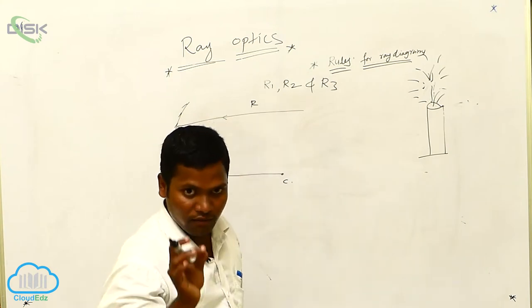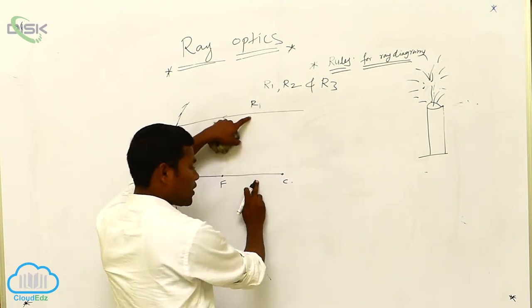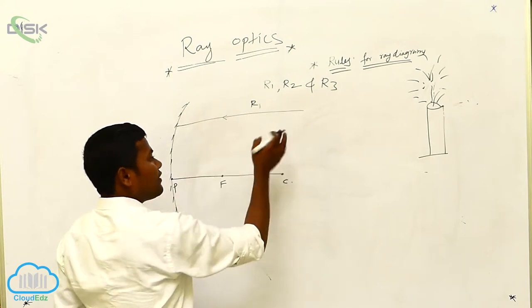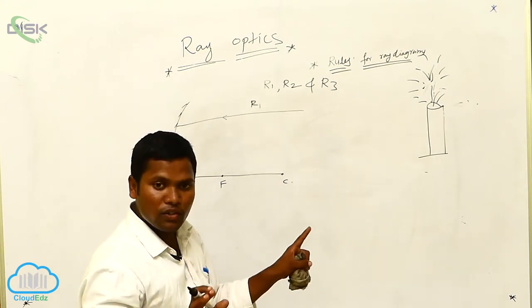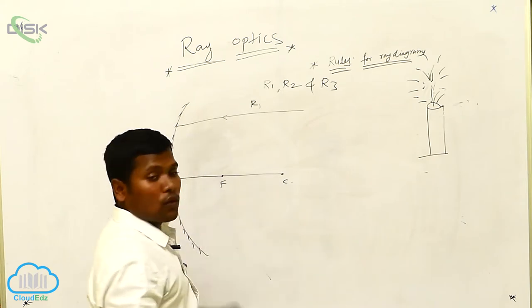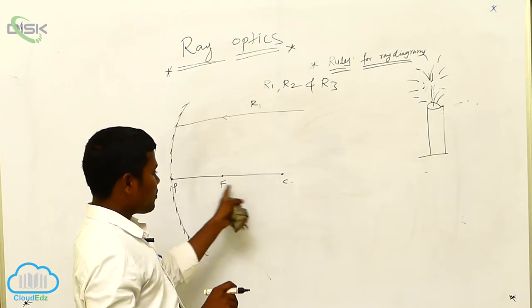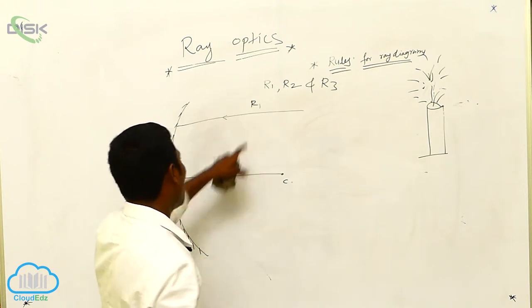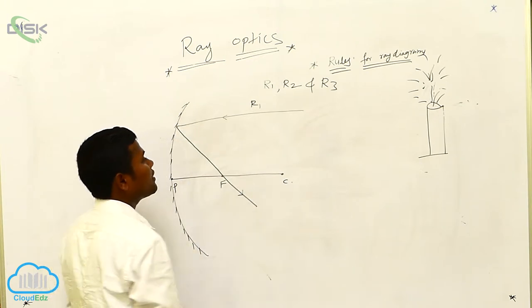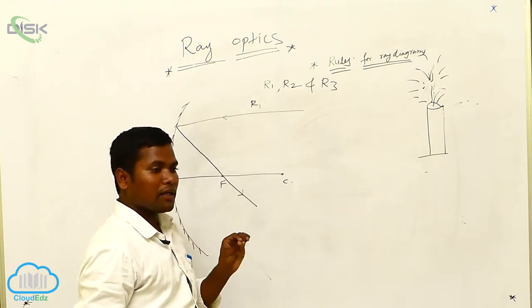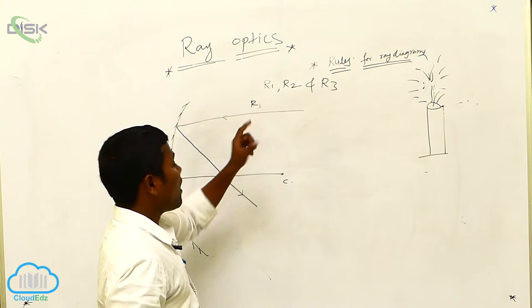This R1 ray is parallel to the principal axis. The ray is coming in and striking on the mirror. After that, there is no chance to go outside because the outside is coated — due to that, it has to come back. The parallel ray, with respect to the principal axis — after striking on the mirror, it definitely passes through the focus. This is the first rule for R1: always if you take a parallel ray, parallel to the principal axis, after striking on the mirror it definitely passes through the focus. This is the R1 characteristic.